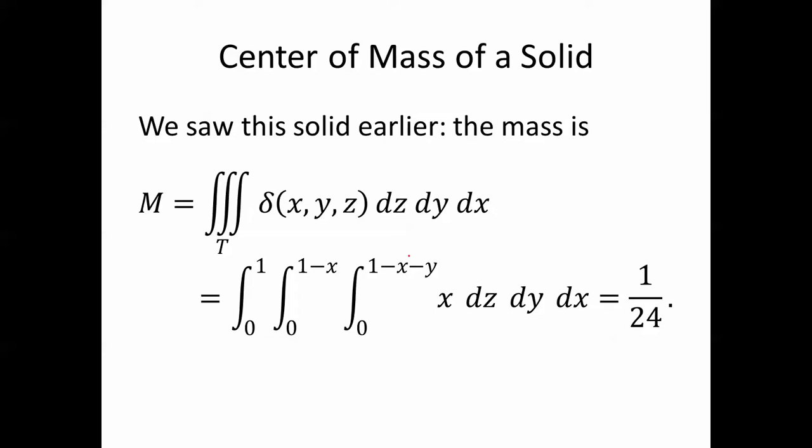In this case, z goes from the bottom, which is 0 to the top, z equals 1 minus x minus y, and these are the limits of integration on x and y. y goes from 0 to 1 minus x, x goes from 0 to 1. When we evaluate this integral, we get 1 24th. We've seen that before.